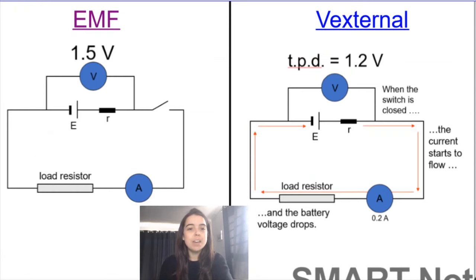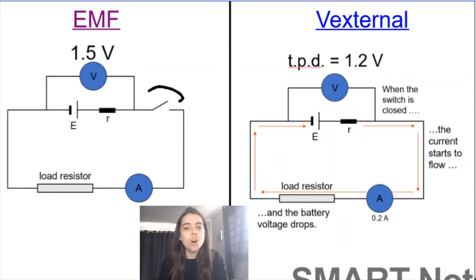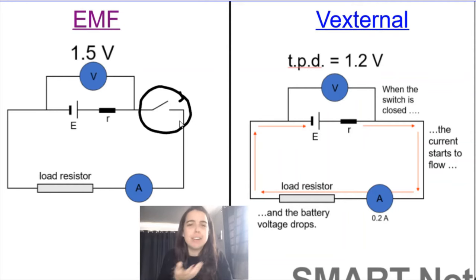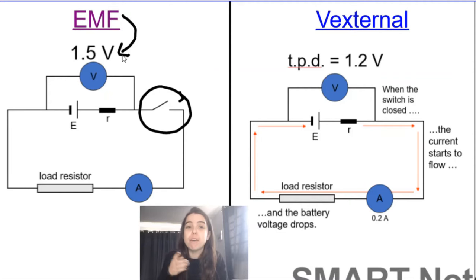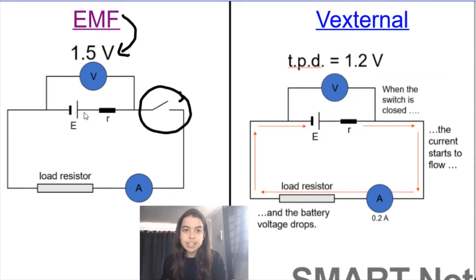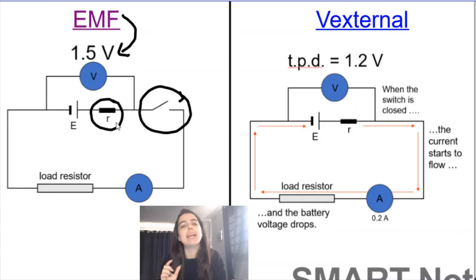On the left side of the diagram, the switch is open. When the switch is open, there is no current flowing through the circuit, and the voltmeter connected across the terminals of the battery measures the EMF — in this case, 1.5 volts. Since no current is flowing, the internal resistance of the battery does not come into play.